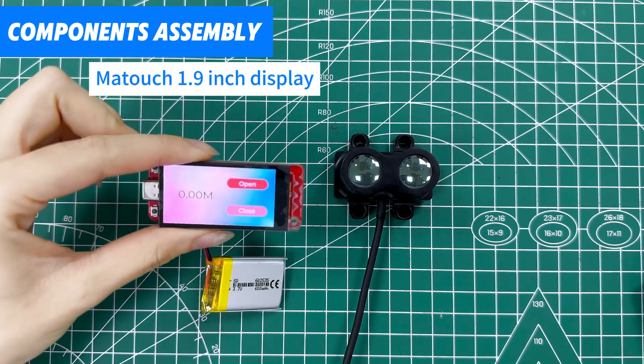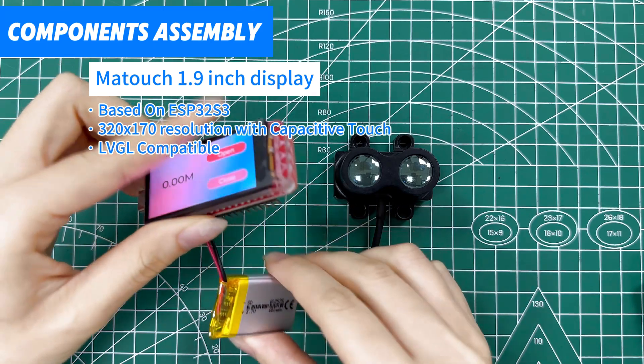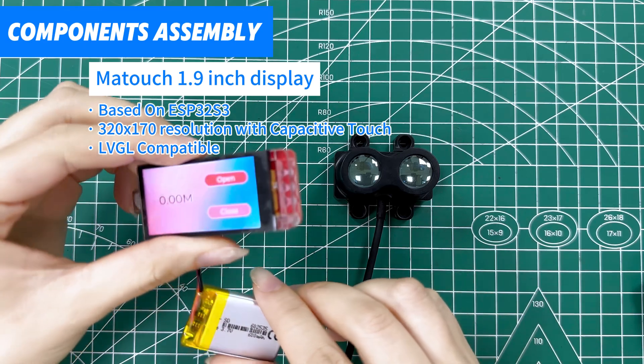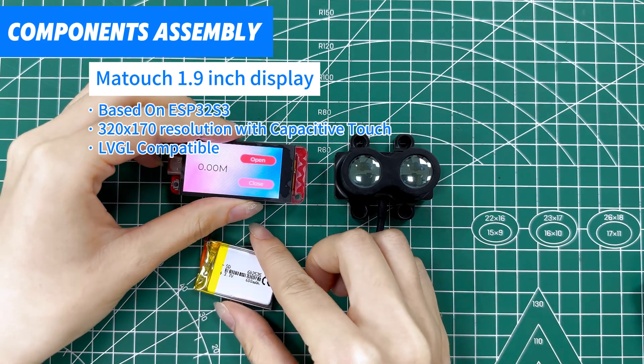And this is our Maytouch 1.9 inch display. It's based on ESP32-S3. It has capacitive touch which enables us to make it a range finder controller.